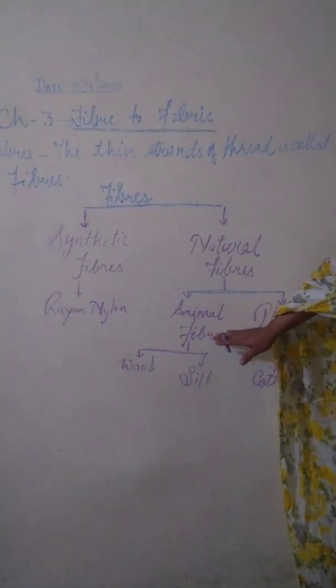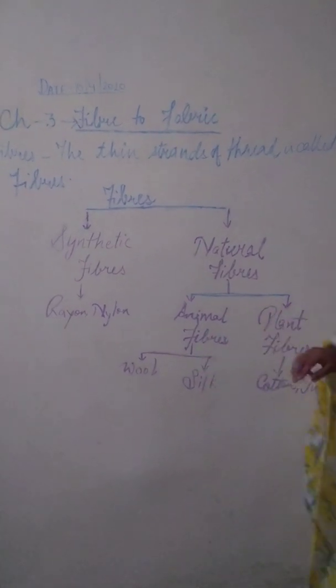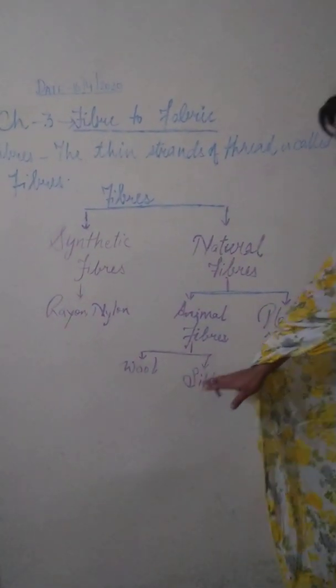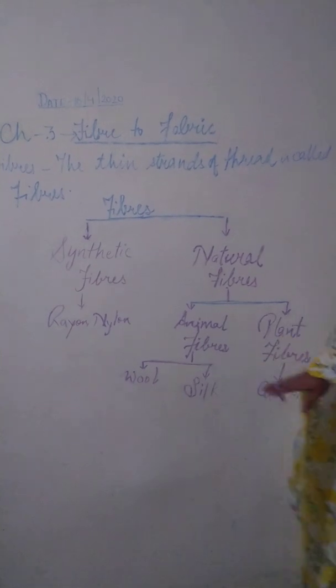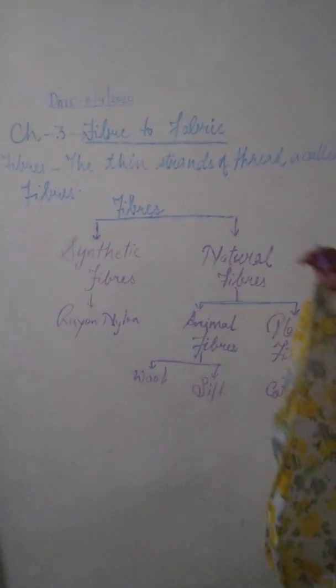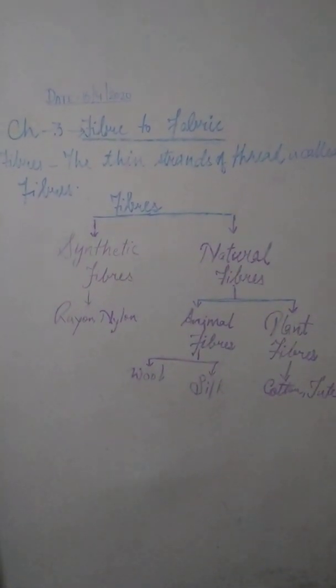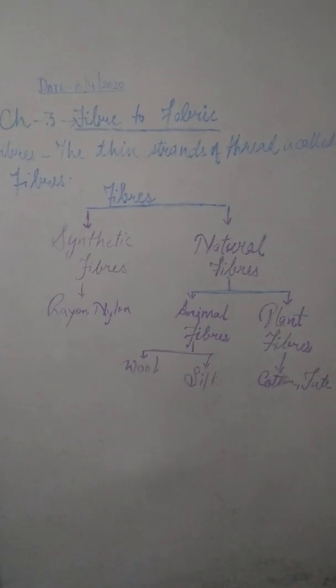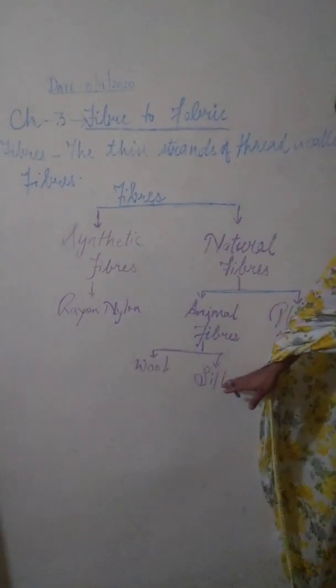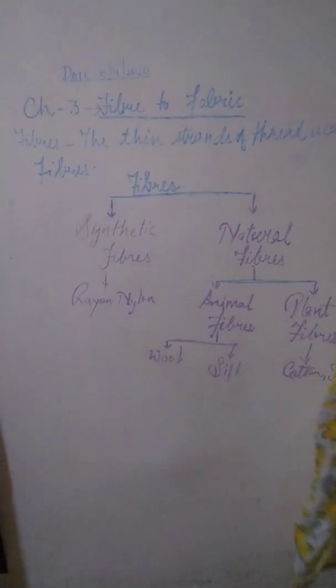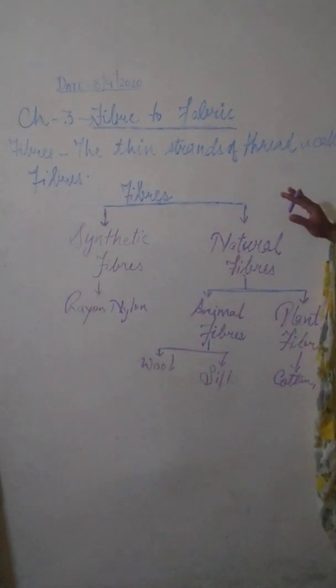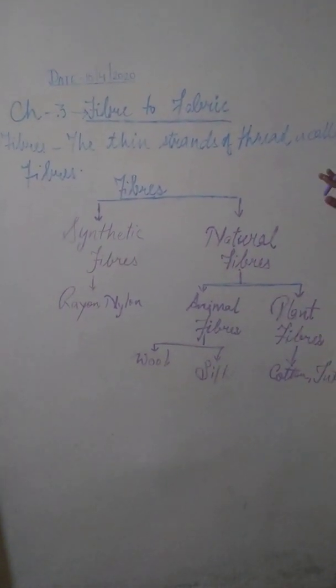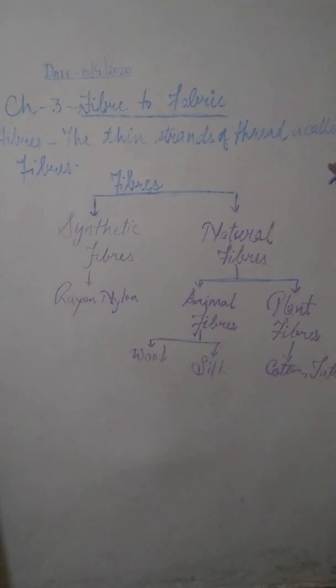Now in class 7, we have to learn about animal fibers and from where do we get it. We get animal fibers such as wool and silk from animals. Wool we get from sheep, yak, alpaca, llama, whereas silk we get it from silkworm. In fibers and natural fibers, we have to read only about natural fibers that we get from animals.